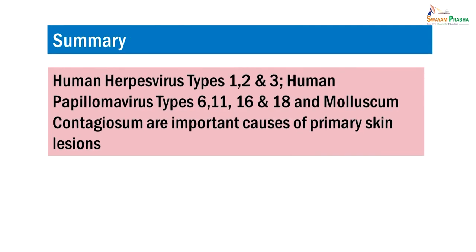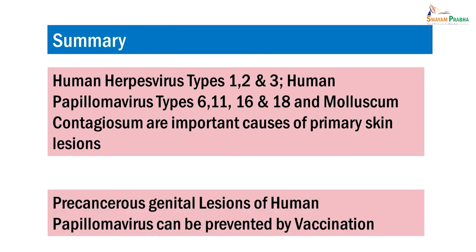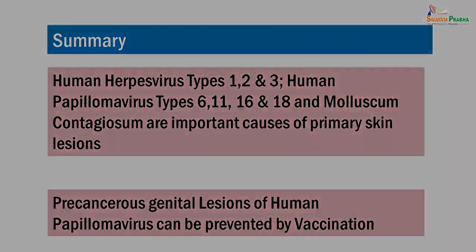To summarize: human herpes virus types 1, 2, 3, human papilloma virus types 6, 11, 16, 18, and molluscum contagiosum are the important causes of primary skin lesions. Precancerous genital lesions of human papilloma virus can be prevented by vaccination. Thank you.